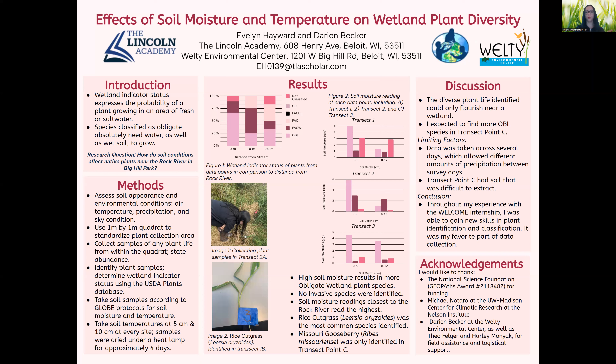Along with this practice, I also used the GLOBE protocols for soil temperature. For this, I used a thermometer to take the temperature of the soil at 5 centimeters and 10 centimeters respectively. The findings for soil conditions were both reported on a pre-made data sheet. As seen in image one, the final piece of data taken from each data point was a sample of each plant growing within the sample area.